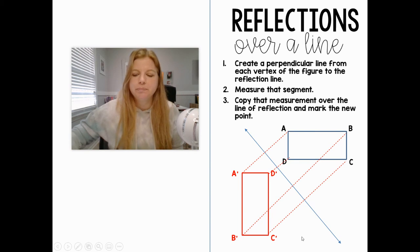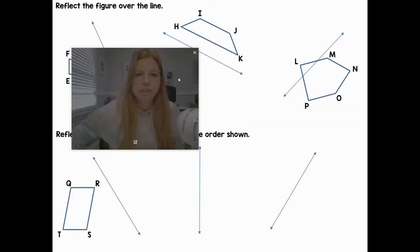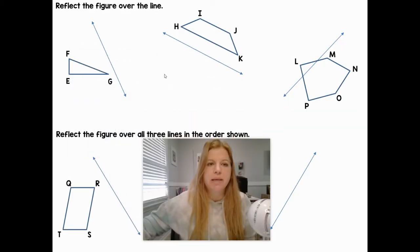We're going to take a look at some more examples of this same process. If I wanted to take triangle EFG and reflect it over this line, I'm going to create a perpendicular line from E that intersects my reflection line. Then I'm going to make sure that that length here from E to the reflection line is duplicated onto the other side. So there's E prime.